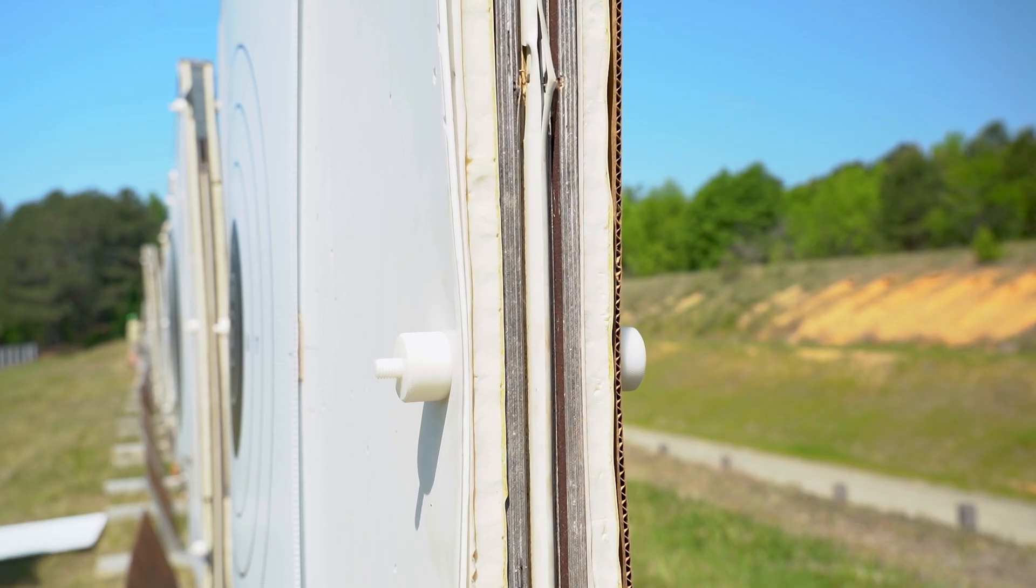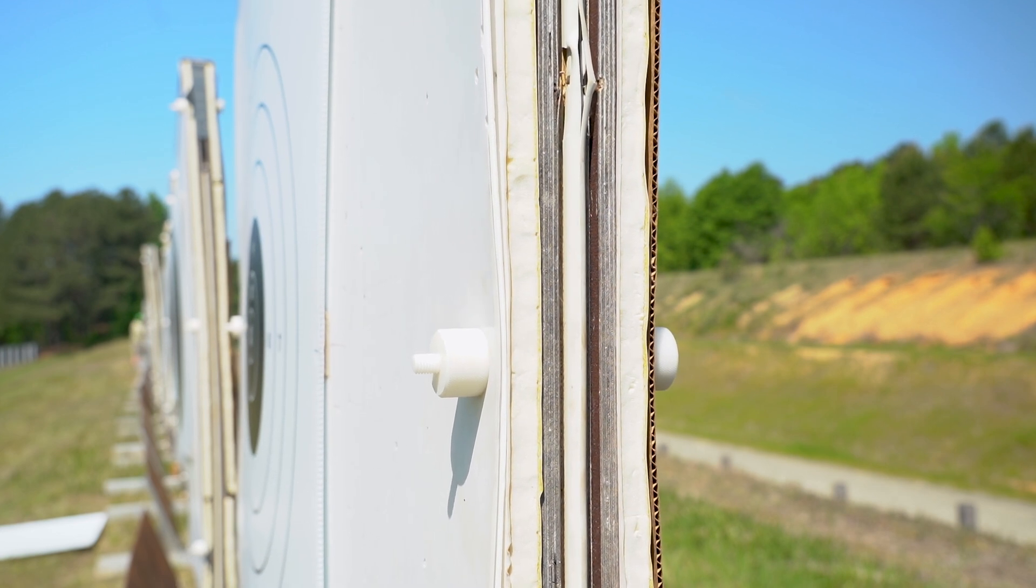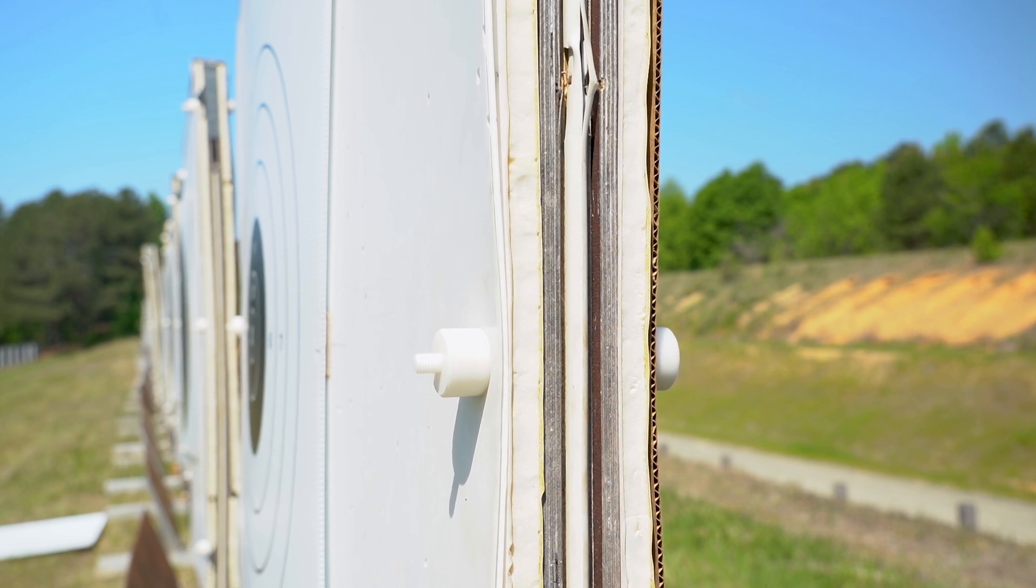So this is a cross section of the target so that you can tell the thickness of the side of the target and inside is that chamber where the microphones are so that it can hear the bullets going through.